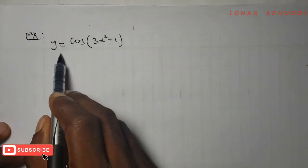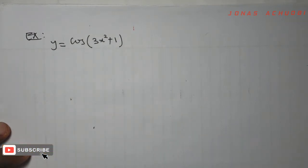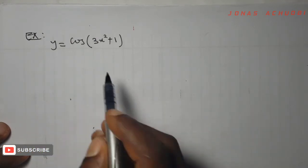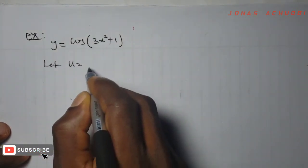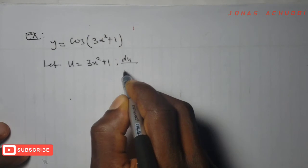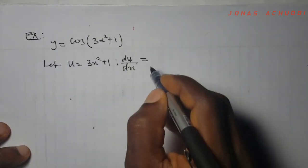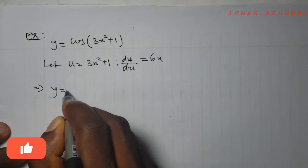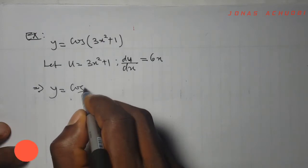Our next example is y equal to cos(3x² + 1). Here again we see a function that carries another function in it. The inner function is 3x² + 1. So we say let u equal 3x² + 1. We differentiate u with respect to x — du/dx — and that gives us 6x. The function now becomes y equal to cos u.